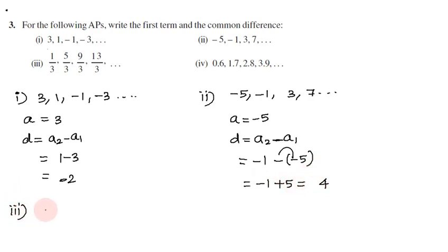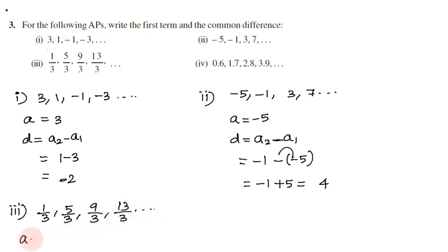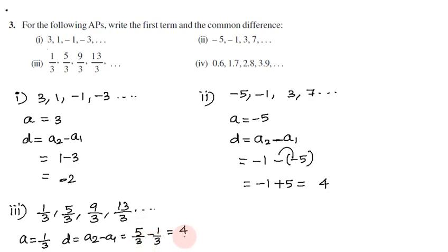Third subdivision: 1/3, 5/3, 9/3, 13/3. First term is 1/3. Common difference = second term minus first term = 5/3 minus 1/3 = (5 minus 1)/3 = 4/3.